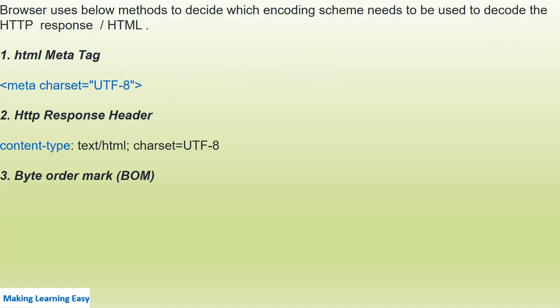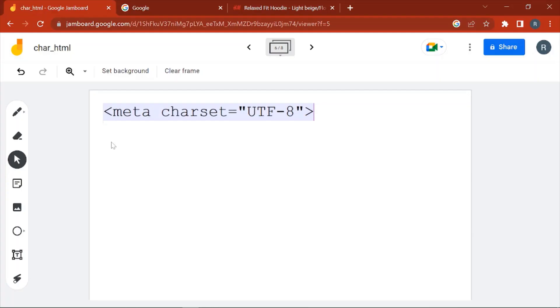There are a few methods through which a browser can understand which encoding scheme should be used to decode or parse the HTTP response or HTML. The first method is using the HTML meta tag, the second is the HTTP response header, and the third is the byte order mark (BOM). Let's see all three methods one by one.